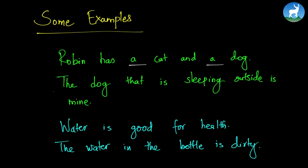The dog that is sleeping outside is mine. We are referring to a particular dog, so we use 'the dog that is sleeping outside.' We have a relative clause here. In this second example, the dog is not any kind of dog — it is a particular dog.